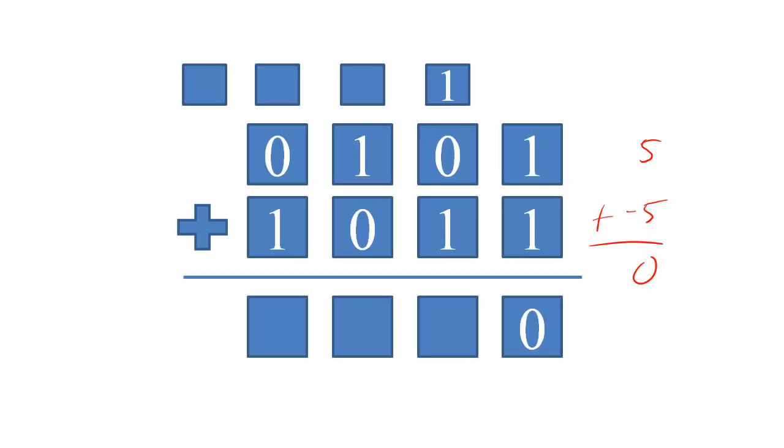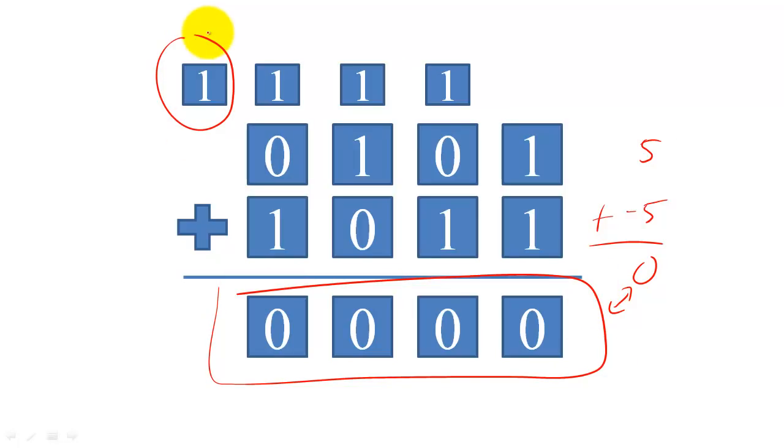So 1 plus 1 is 0, and we carry the 1. 1 plus 1 is 0, and we carry the 1, and so forth. We cannot store this final carryout of 1, so the computer will store the 4-bit number 0. So it works!